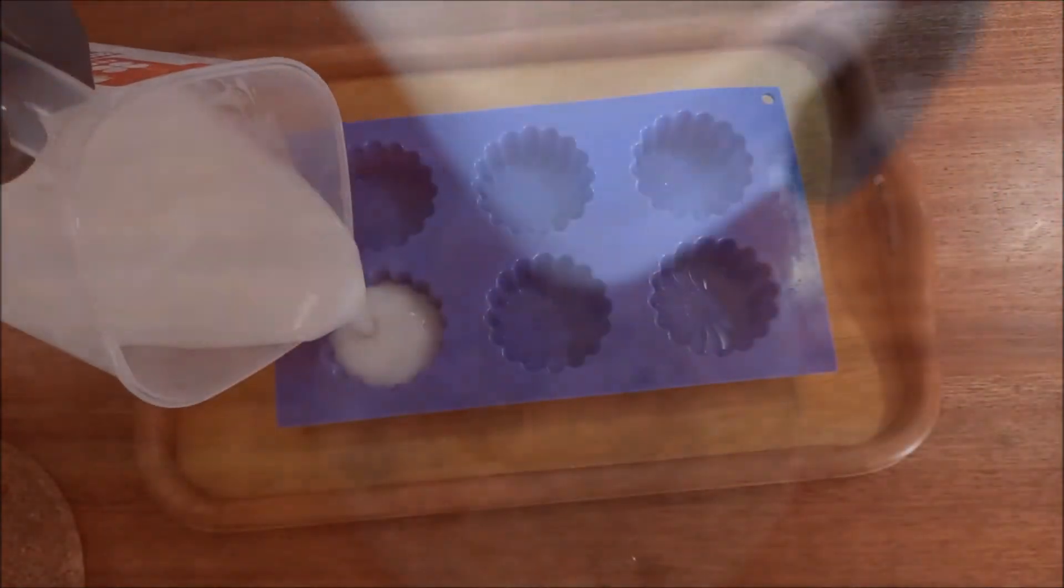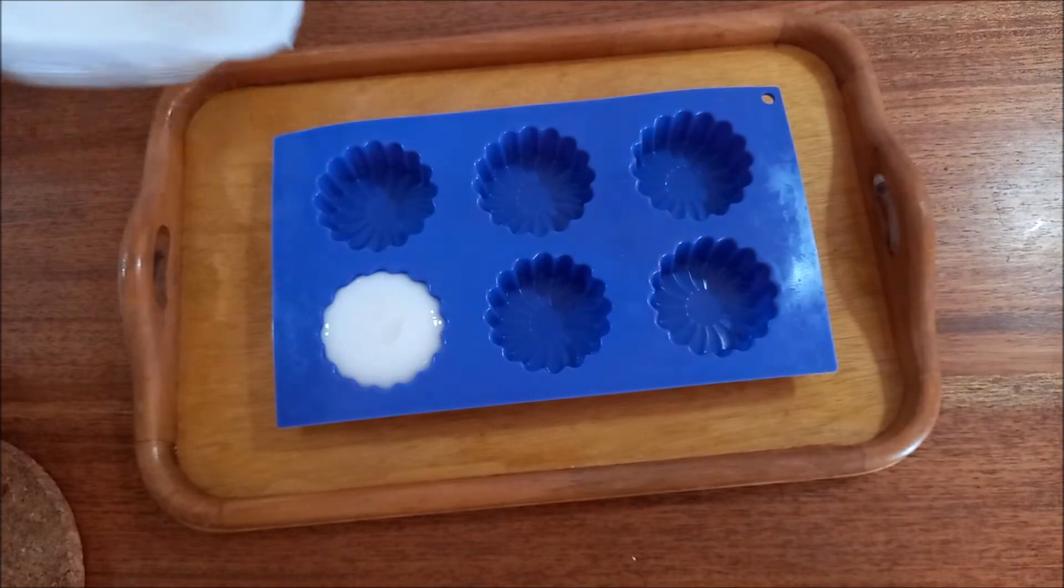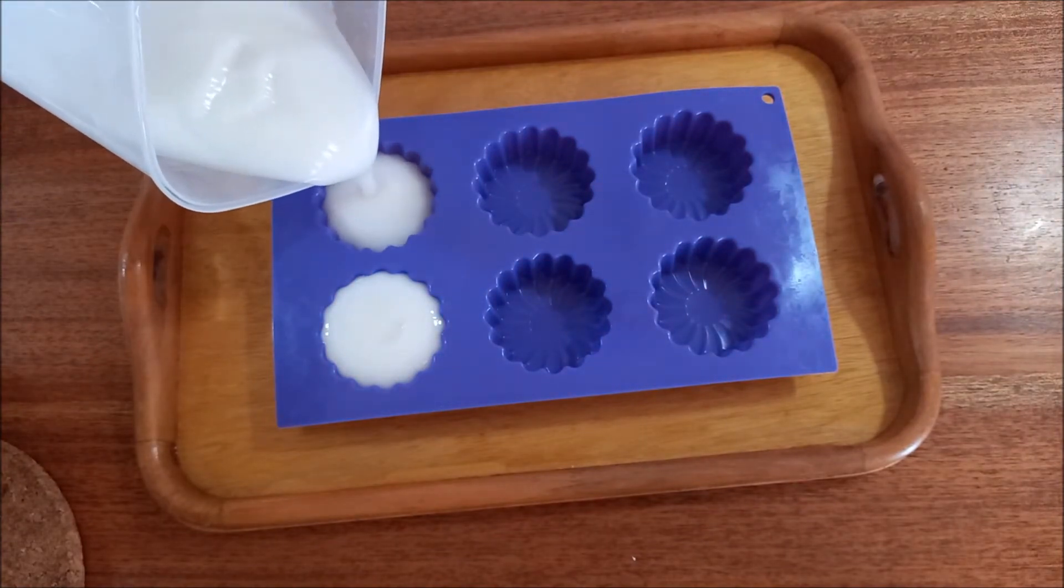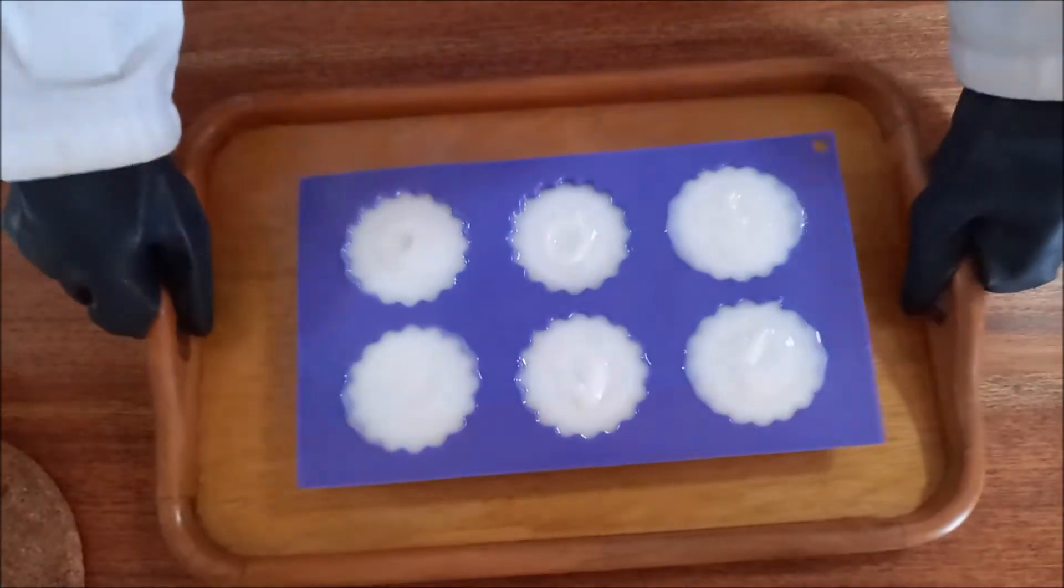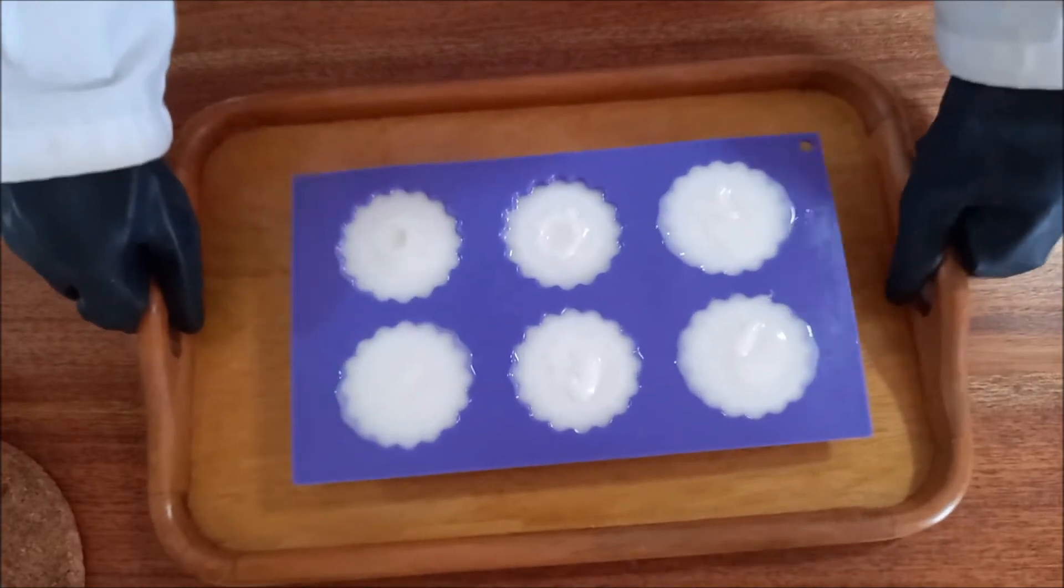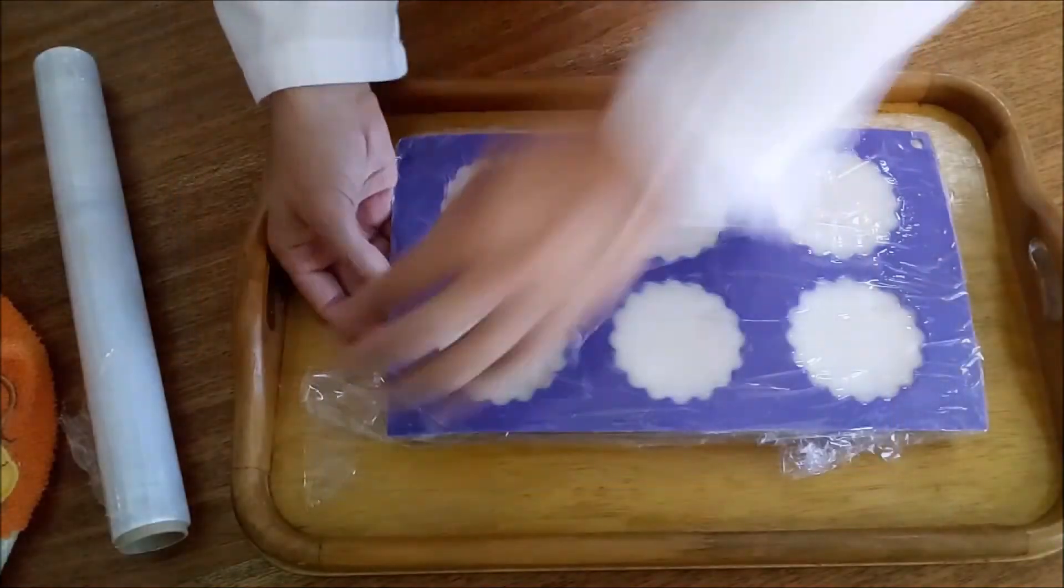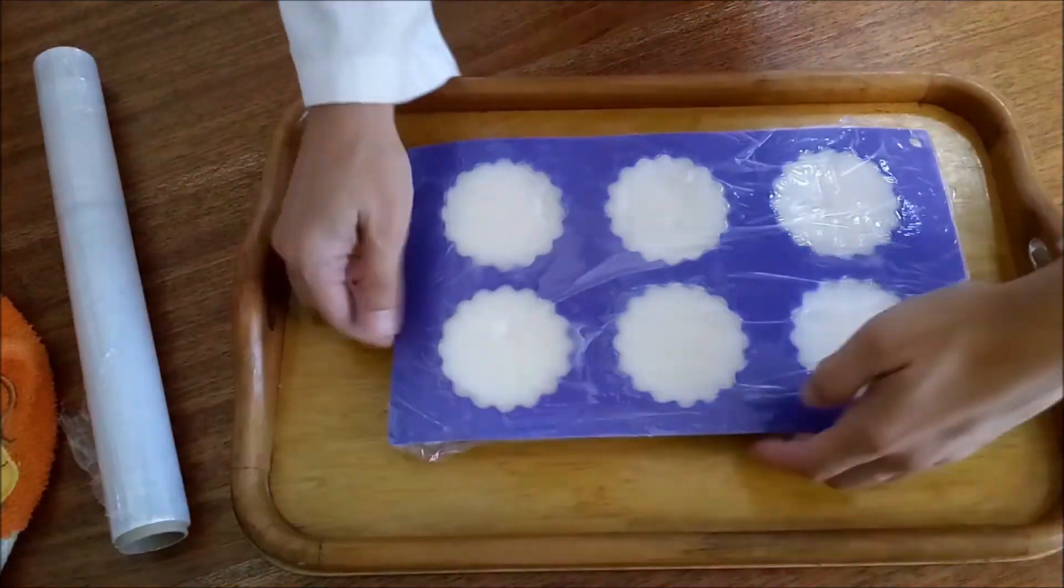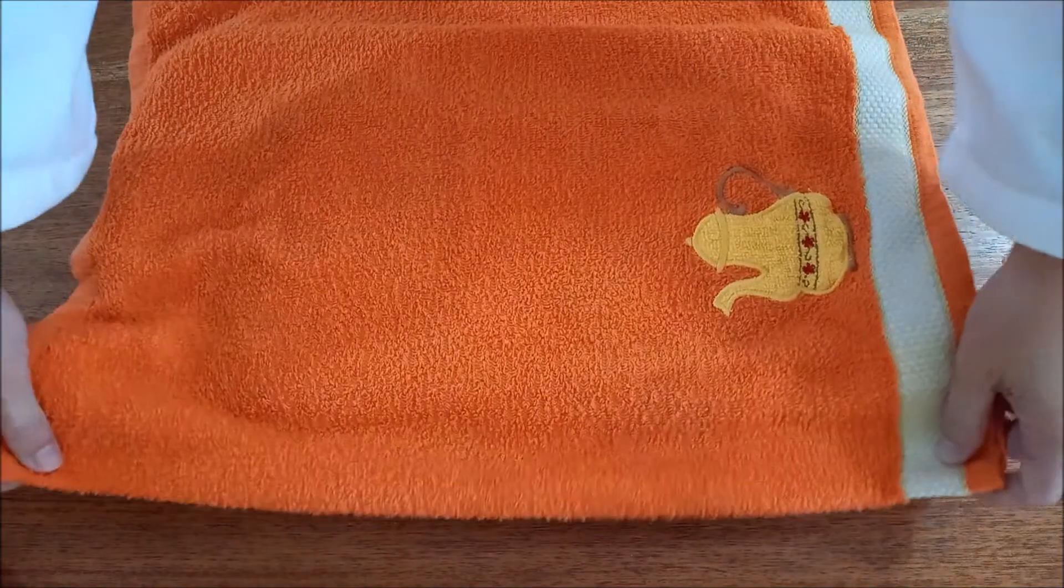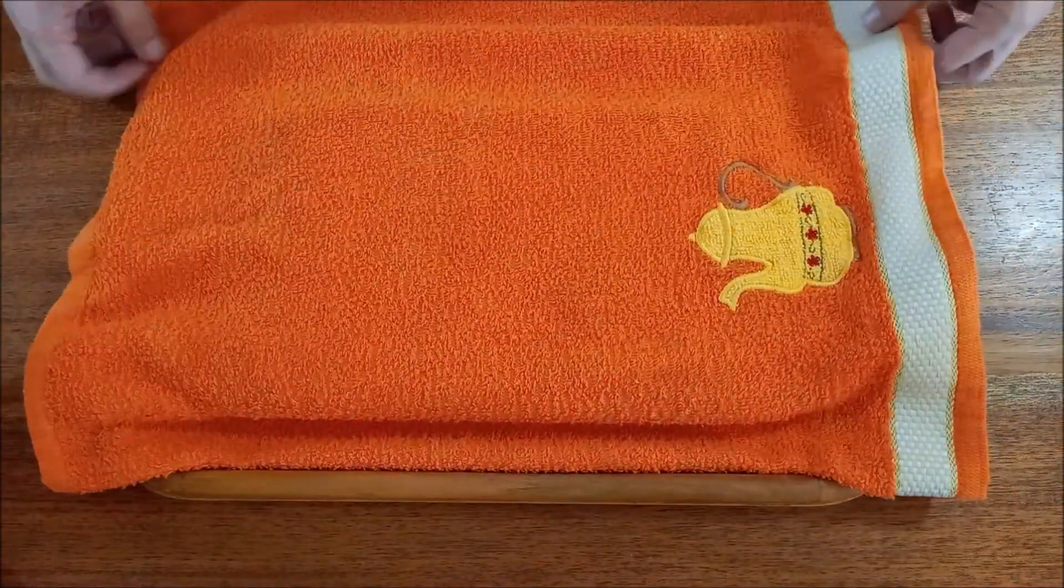Pour the batter into the mold. And with the help of the tray, shake the mold to remove air bubbles that may be inside the batter. Cover with cling film and a cloth to help maintain the temperature. Isolate for 24 hours undisturbed until it hardens.